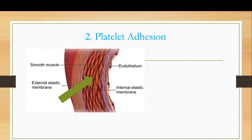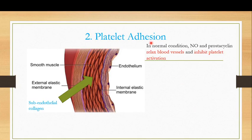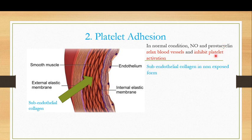Welcome back to this next video in the series on primary hemostasis. In the previous video I told you about platelet adhesion, and that during normal conditions the nitric oxide and prostacyclines, which are vasodilators, relax the blood vessel and inhibit platelet activation. During normal conditions the subendothelial collagen, an important structural component of the smooth muscles in blood vessels, is in the non-exposed form — present on the interior of the blood vessel.